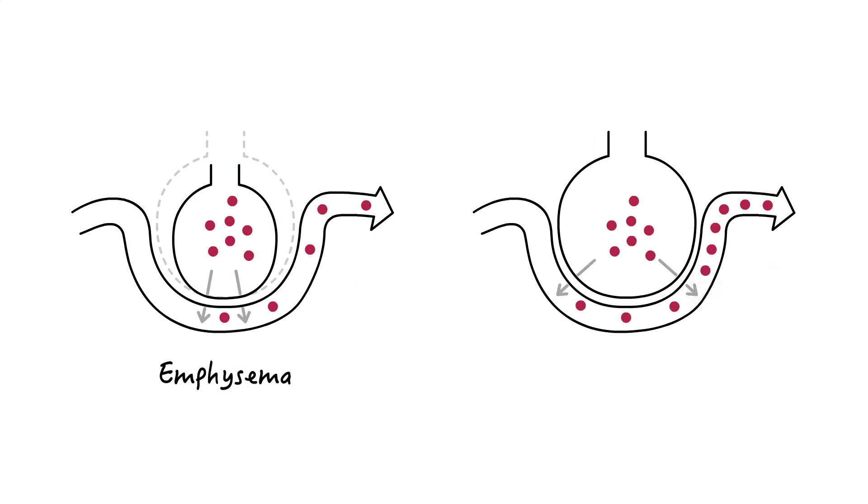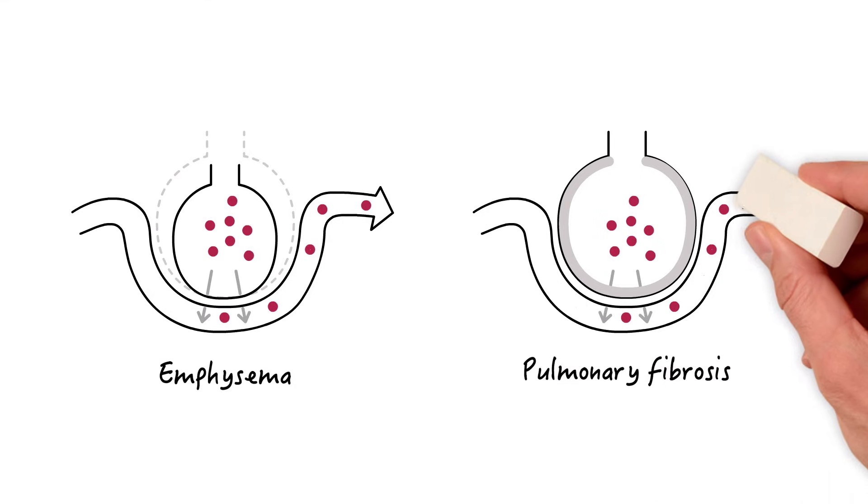Similarly, an increase in the thickness of the alveolar wall, as seen in pulmonary fibrosis, will limit diffusion of oxygen.